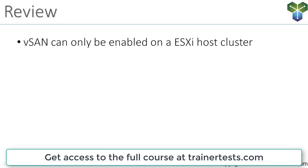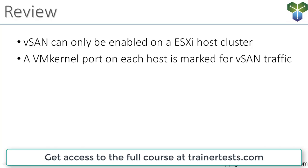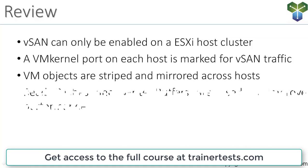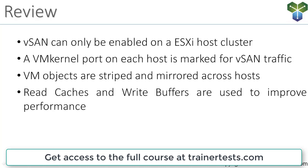In review: virtual SAN can only be enabled on a cluster of ESXi hosts, and each one of those hosts has to have a VM kernel port marked for vSAN traffic — that's where all virtual SAN reads and writes flow. Virtual machine objects are striped and mirrored across hosts in case of a host failure. Read caches and write buffers are used to improve performance, and on the back end we have the actual capacity devices.